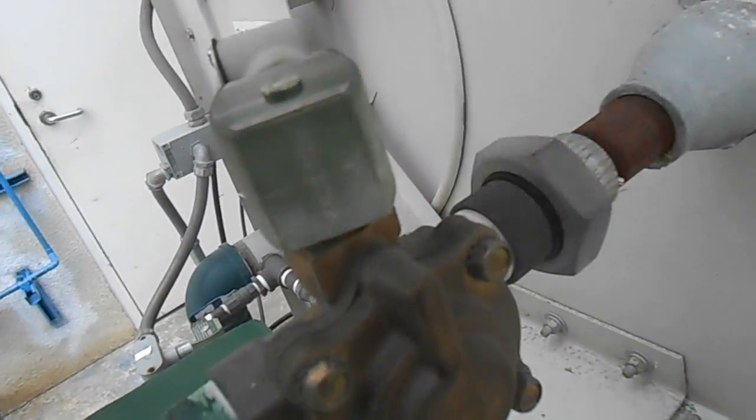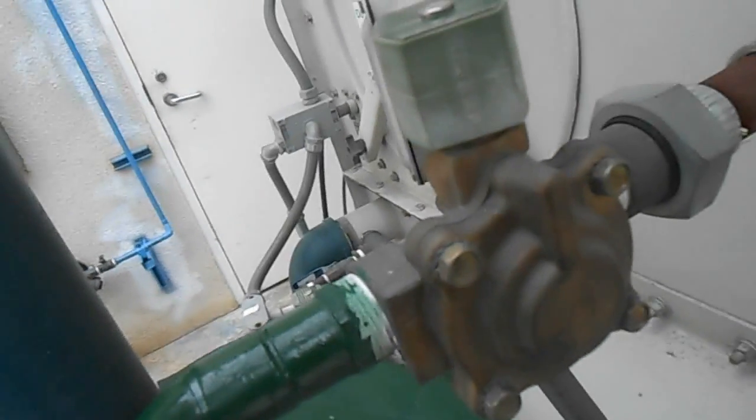Take apart this union over here, a little dielectric one, and replace that bad boy. Now this is a normally closed valve. I'll show you the wiring in a minute. It's normally closed, and then when it's energized, when the tower calls for makeup water, it opens.